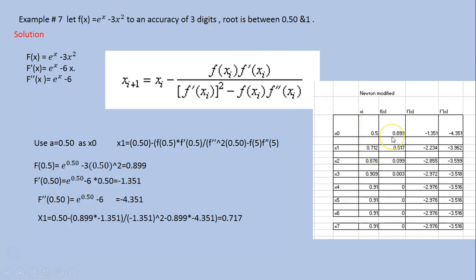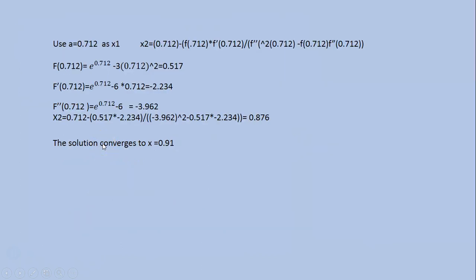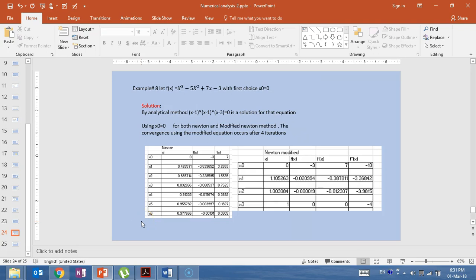The new value x₁ equals the previous value minus the numerator — f'(x) squared minus f(x) times f''(x). We substitute and get the updated figures. Continuing, we compute x₂ by plugging in to get f(x), f'(x), f''(x), and so on, until f(x) approaches zero. The solution converges to x = 0.91.